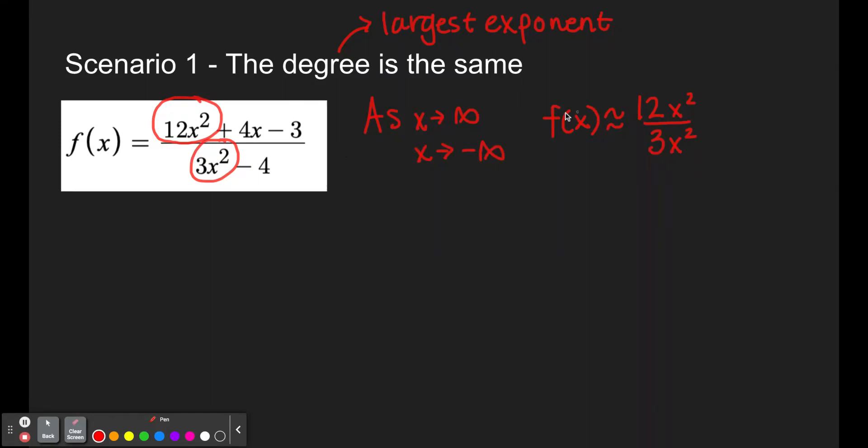But when we zoom all the way out and when we look at numbers that are close to infinity, this function f of x and 12x squared over 3x squared, they kind of have the same behavior as x gets huge.